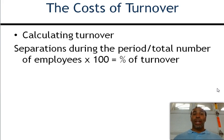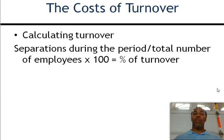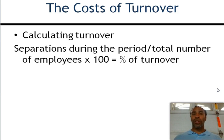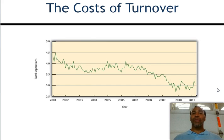You can actually calculate turnover using this formula: separations during the period — let's say four people separated — divided by the total number of employees, say 45, times 100 equals the percent of turnover. You can try it out and you'll see that it definitely works.